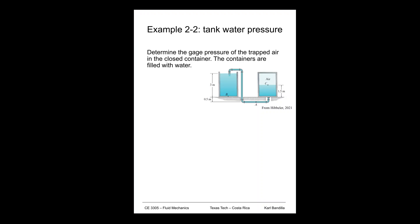This is example 2-2. We're going to look at water pressure in a tank, or in two tanks actually. We see our two tanks here, and we're asked what the gauge pressure of the trapped air is, basically the pressure at sea.